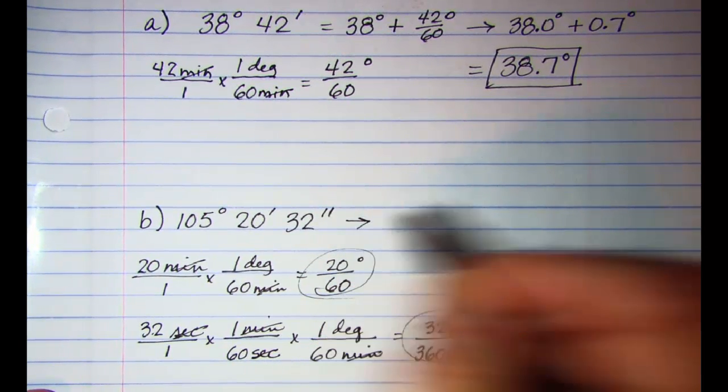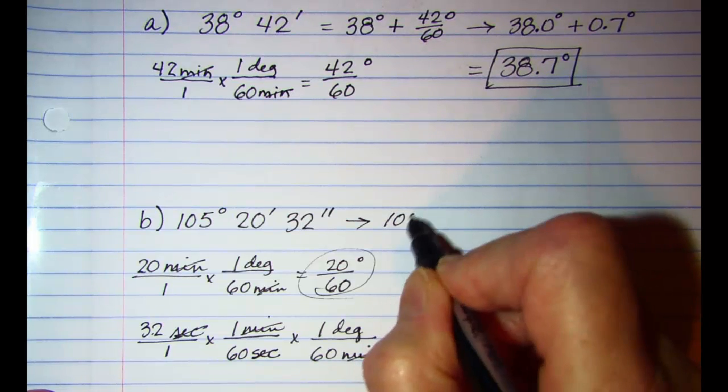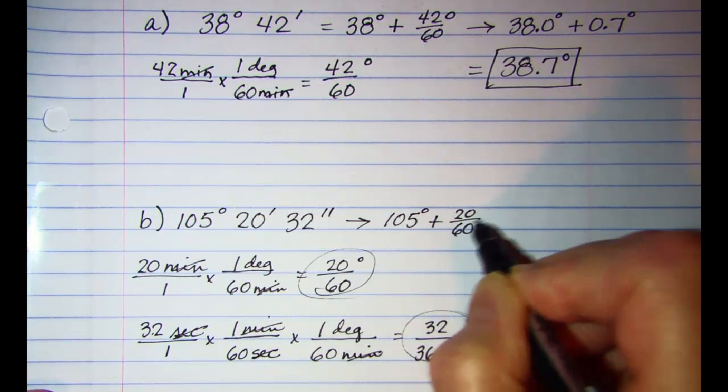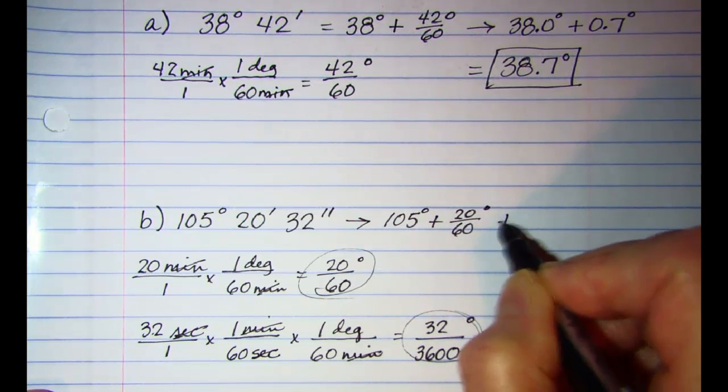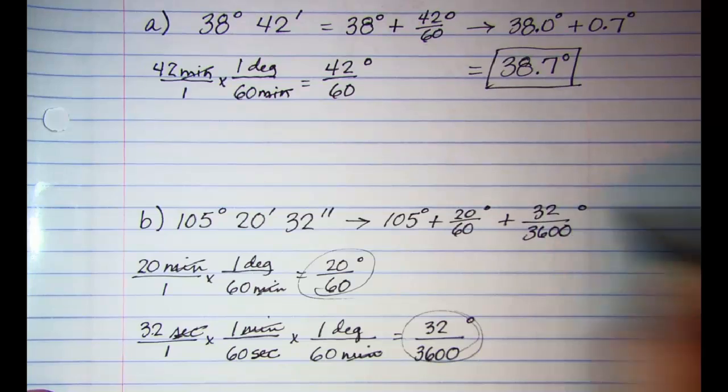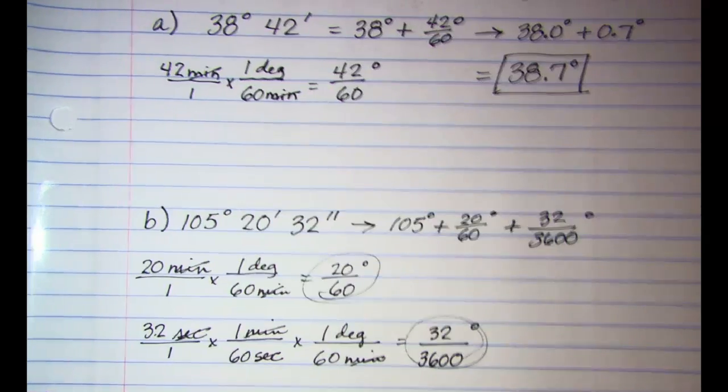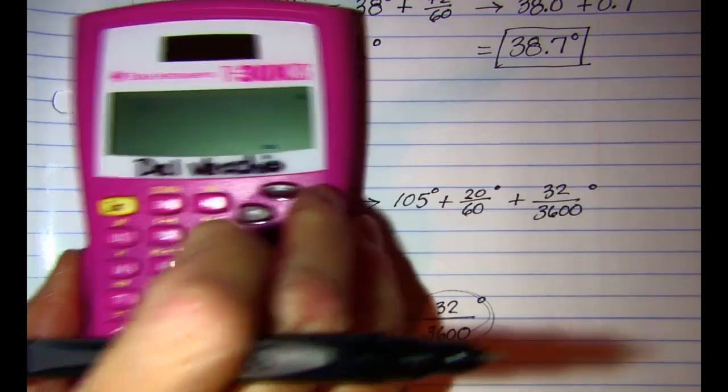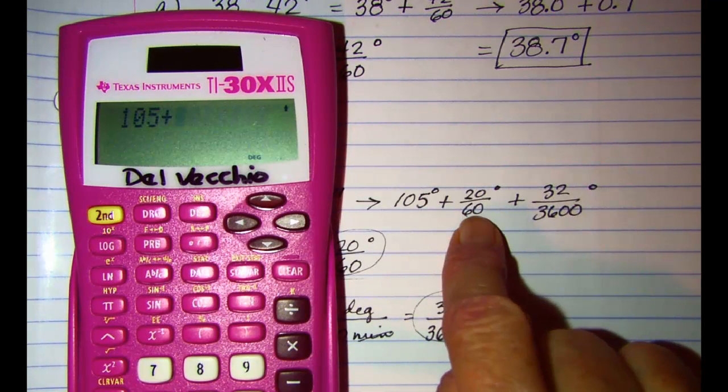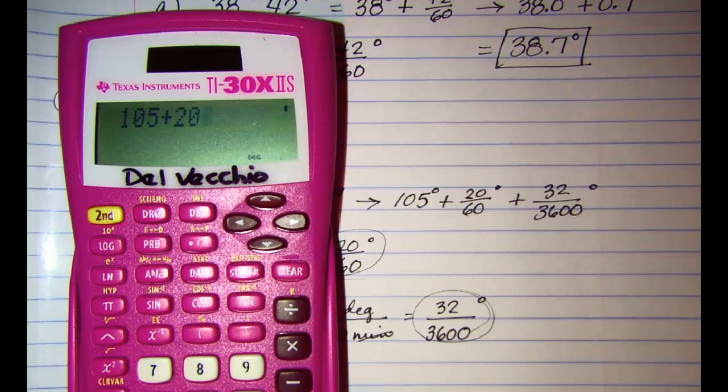This will be then 105 degrees plus 20 sixtieths of a degree plus 32 over 3600 of a degree. And we'll just do this on our calculator. 105 plus 20 over 60 plus 32 over 3600.